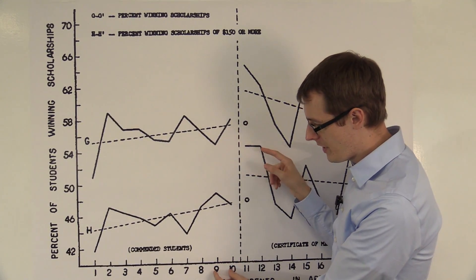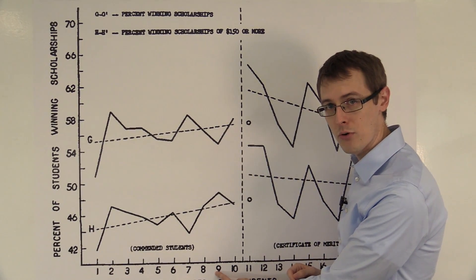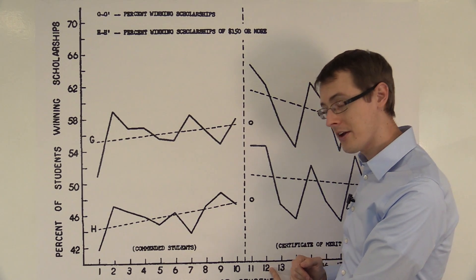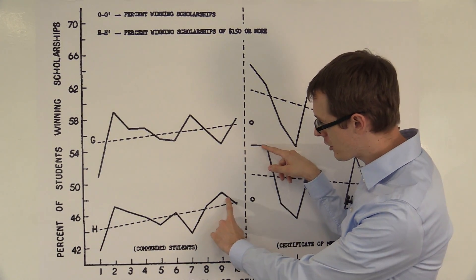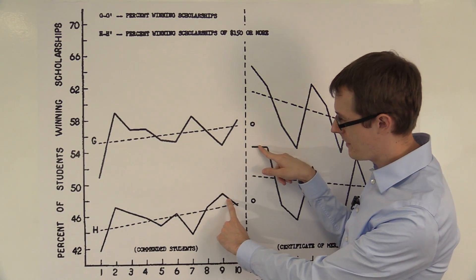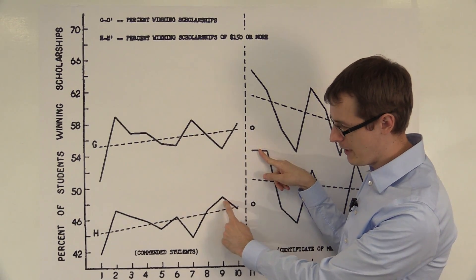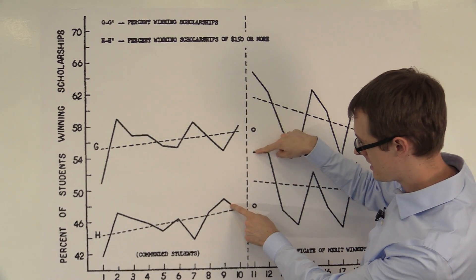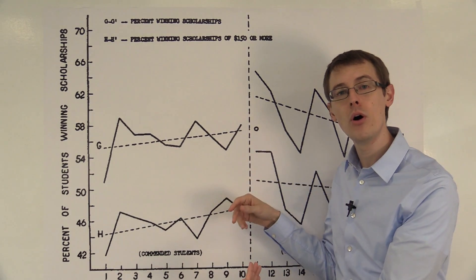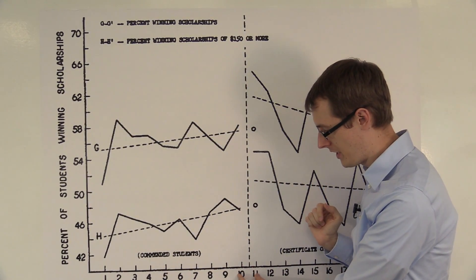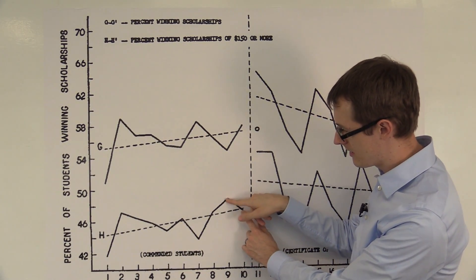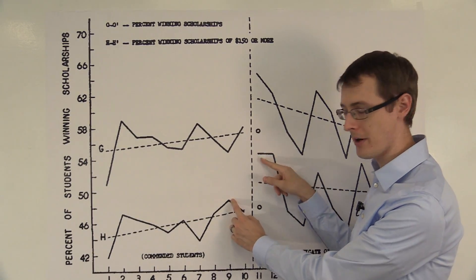So if we included 9s in our control group and the 12s in our treatment group, then the treatment effect would be the difference between this number and something right in between these lines, or about this distance right here. It would actually be a little bit smaller than if we only included the 10 and 11, because these people are closer up here.